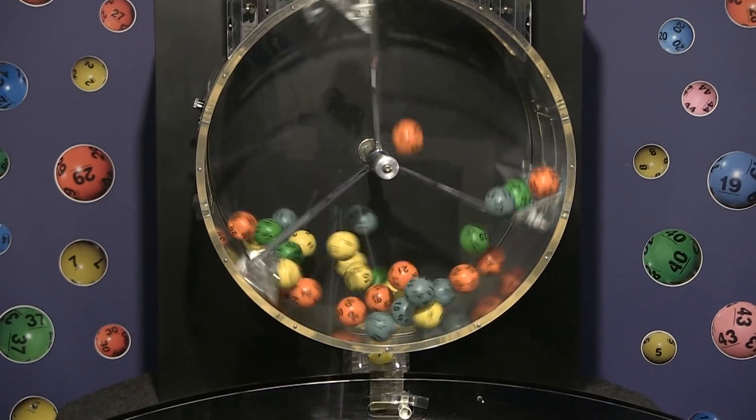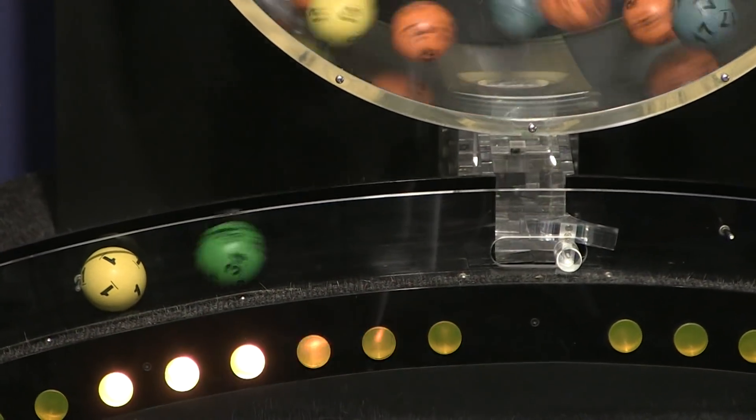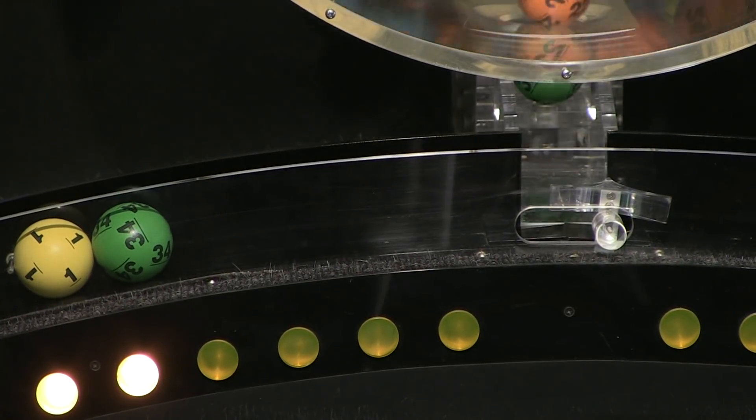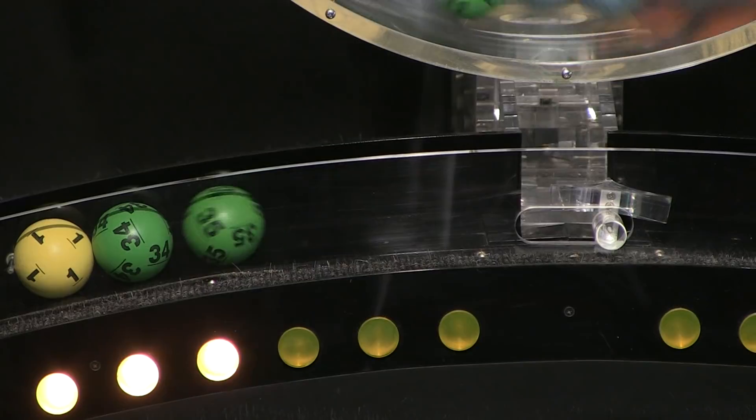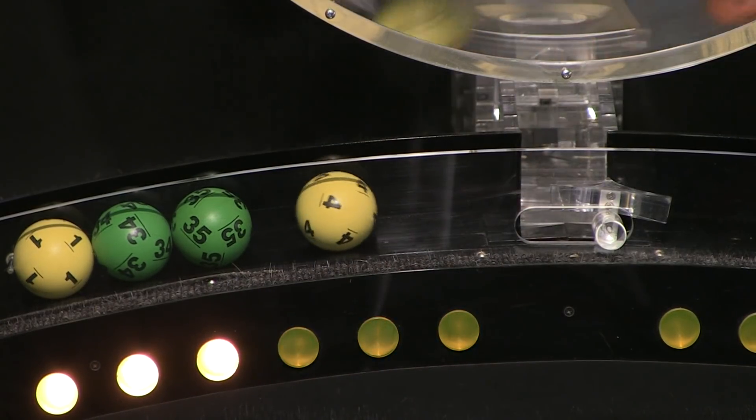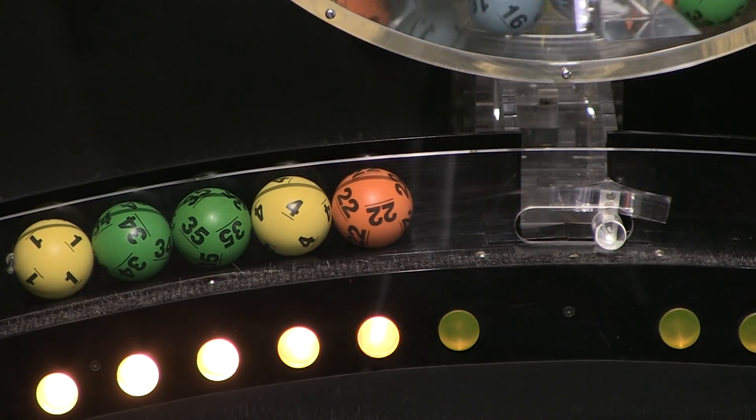First number up is number 1, following that we have number 34. And here comes number 35. Up next is 4, and the final ball in this sequence is number 22.